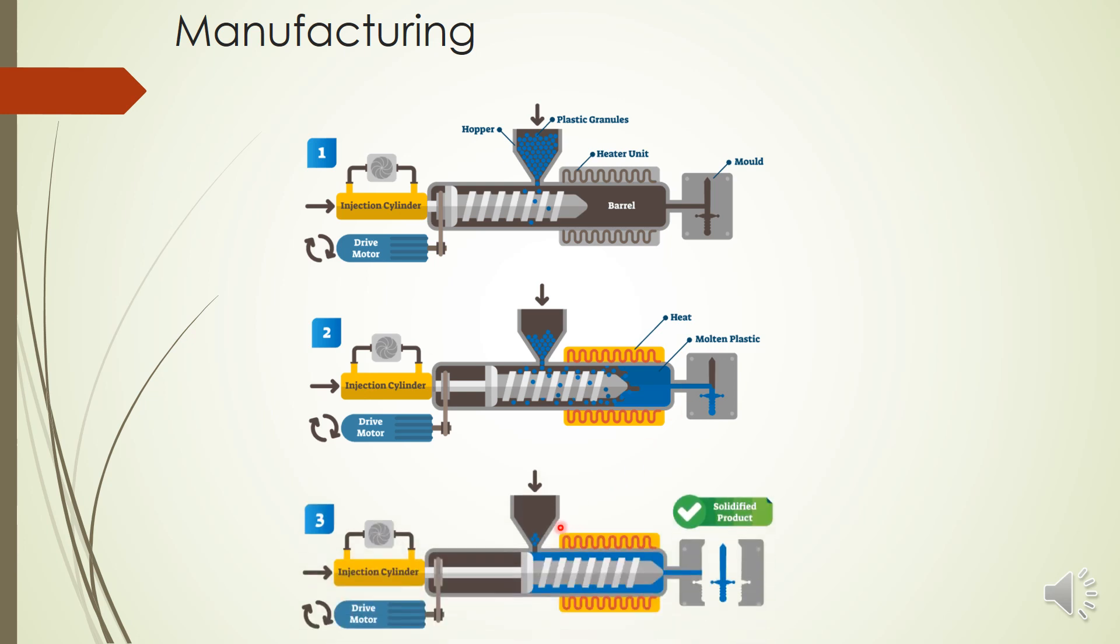The moment you inject the complete material, it is allowed to cool off. Plastic is very quick to cool. When it cools, it can be detached and a particular shape is obtained from this procedure. This is called injection molding.